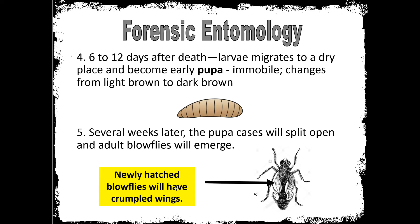When the maggots are finished feeding, they will disperse away from the body looking for somewhere to pupate — this is referred to as a maggot trail by forensic investigators. Once the maggots crawl away, they recess inside the pupa and undergo metamorphosis, emerging as adult blowflies several weeks later. The pupa cases split open and adult blowflies emerge. One distinct characteristic of a young blowfly that has just hatched is crumpled wings, which helps investigators determine postmortem interval.